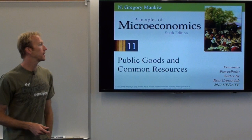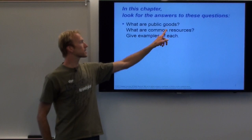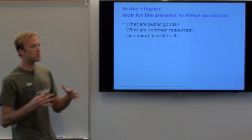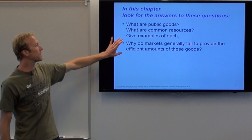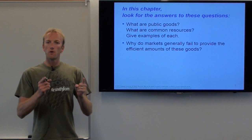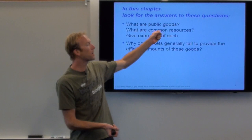The questions you're going to want to look for answers to: what's a public good, what's a common resource, and give examples of each. The big key thing we're going to think about is why do markets fail to provide the efficient amounts of these goods? When the market isn't working — when the market's broken — that's called a market failure. We're going to see with public goods and common resources another market failure.